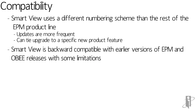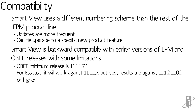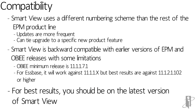Smart View is backward compatible with earlier versions of EPM and OBIEE, though there are some limitations. For OBIEE, the minimum release you want to be on is 11.1.1.7.1. For Essbase, it will work against the 11.1.1.x series, but to get full functionality you want to be at least on 11.1.2.1.102 or higher. Because of frequent changes to Smart View, you want to be on the most recent release whenever you can — upgrade as new releases come out rather than waiting until you upgrade your entire EPM stack.